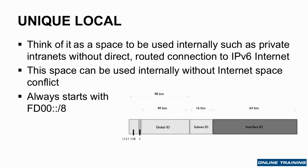Why do I possibly need that many bits to just define what is really the house number? After all, 64-bits is double the number of bits available for the entire IPv4 range. I have 16-bits just for the subnetting alone.